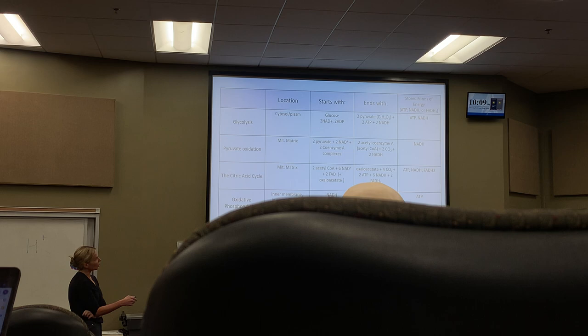Glycolysis — where does it happen? Cytoplasm or cytosol, you can say either. What do we start with? Glucose. I also put NAD+ and ADP, though you don't necessarily have to put the ADP down because when we say ATP is being generated we know automatically we're putting ADP into the reaction. So as long as you have glucose and NAD+ as reactants, that's fine.